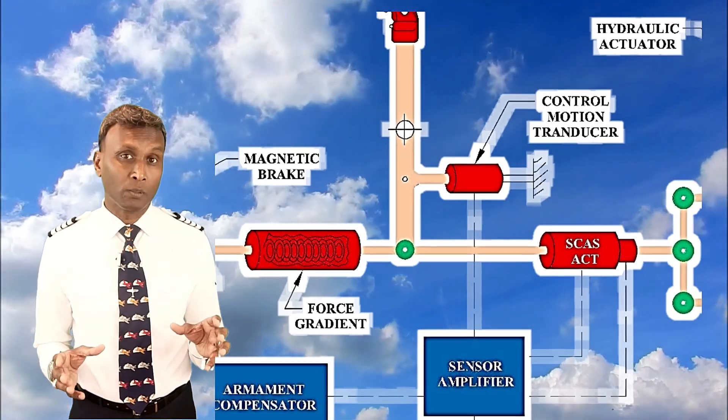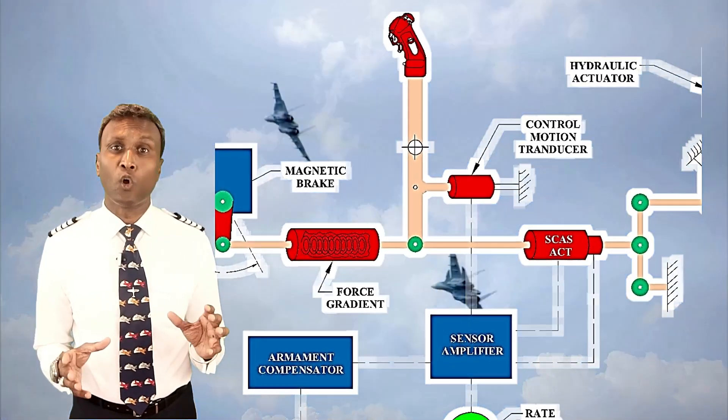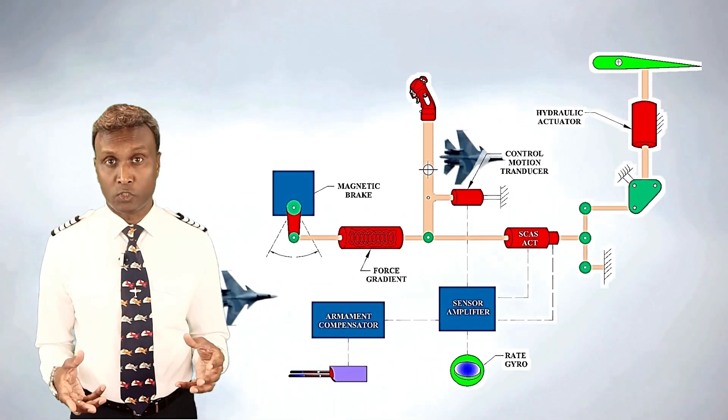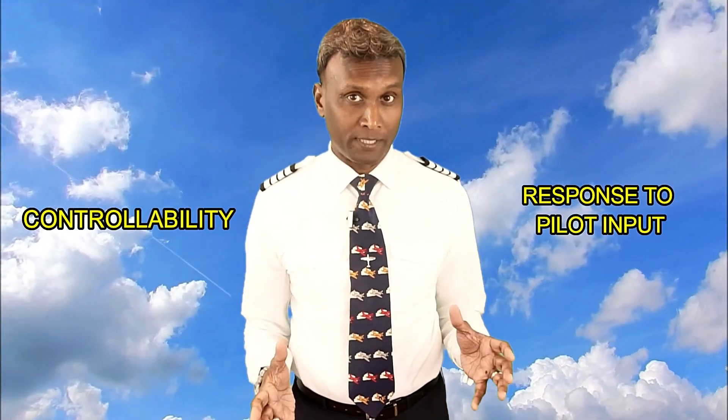Stability augmentation systems provide additional support to pilots, especially in challenging flight conditions or during critical maneuvers. These systems automatically adjust control surfaces or provide feedback to the pilot, enhancing overall controllability and safety. As we wrap up our exploration of stability, maneuverability, and controllability in aviation, it's clear how each element plays a vital role in ensuring safe and efficient flight. Stability provides the foundation for steady flight, maneuverability allows for agile and precise movement, and controllability ensures pilots can manage the aircraft with confidence. Understanding these principles is essential for anyone involved in aviation, from pilots to engineers.